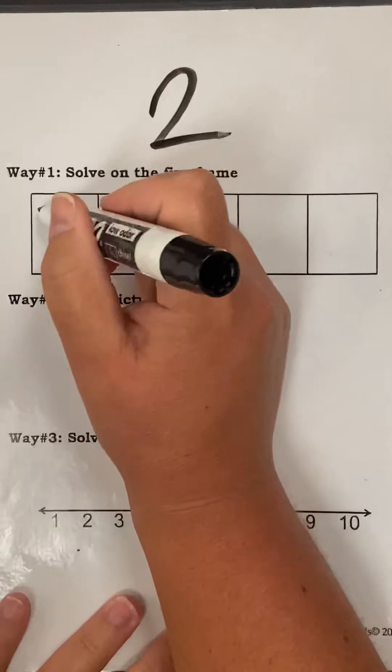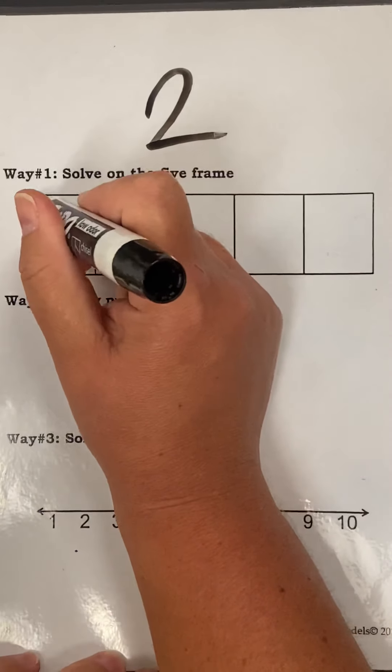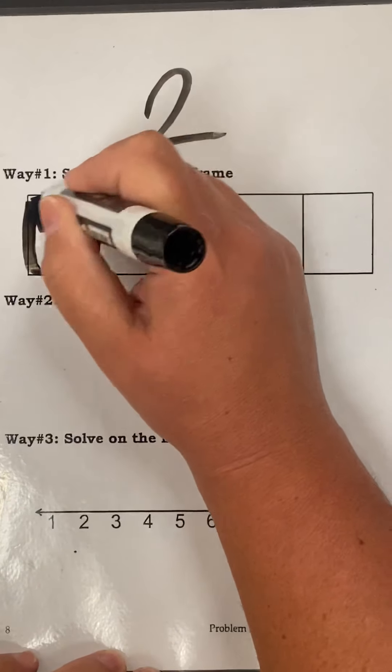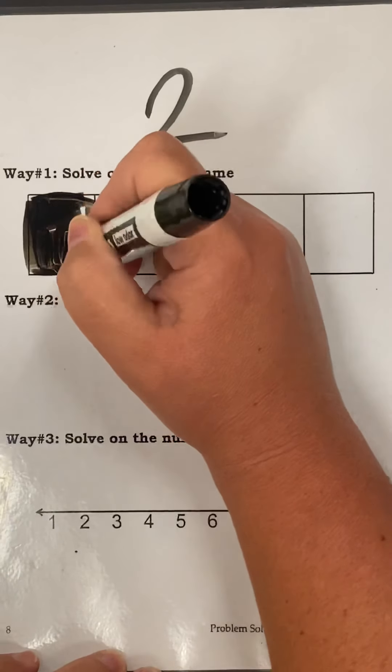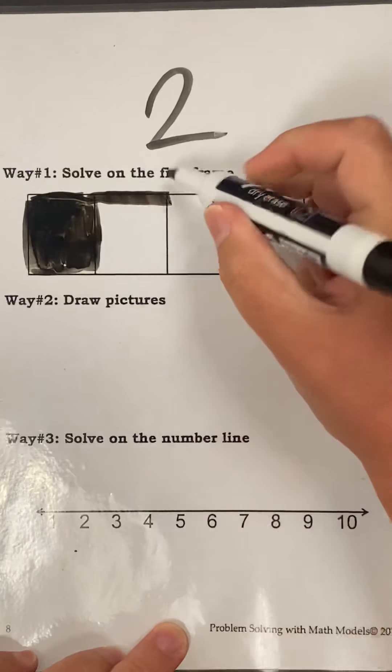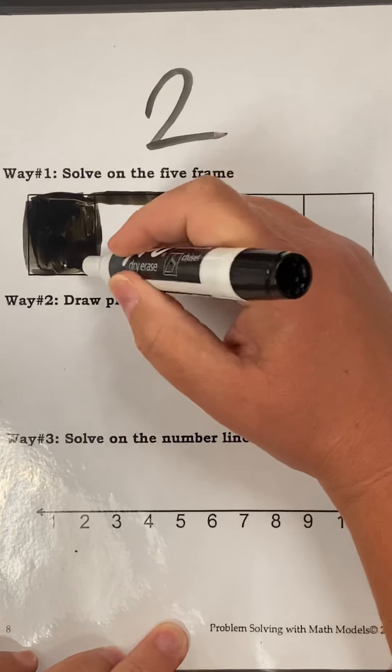So I'm going to color in two spots in the five frame. One, I'm going to start at the beginning, too. Like that. Color it slowly, carefully, stay in the lines. Two. Like that.